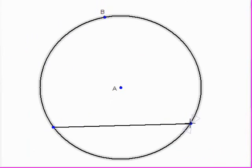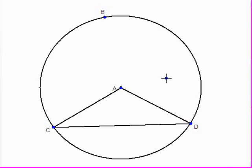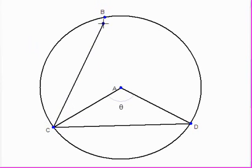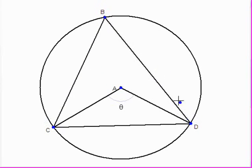Here's my circle and here's my chord. The angle subtended by the chord at the center is the angle CAD, and I'm going to define that to be Theta. The angle subtended at the circumference is CBD. If I ask Geometry Expressions what that angle is, it gives it as Theta upon 2.